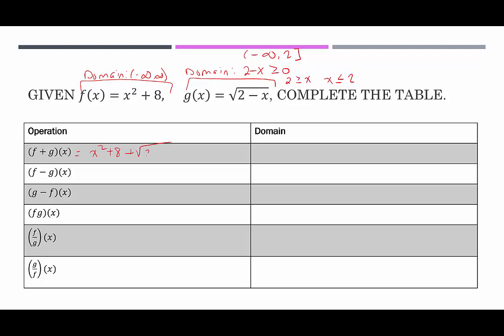The sum function is x² + 8 + √(2 − x). We can't combine anything since there are no like terms. The domain stays the same as g: (−∞, 2]. The first difference function, f − g, is x² + 8 − √(2 − x), and it also has the same domain restriction: (−∞, 2].